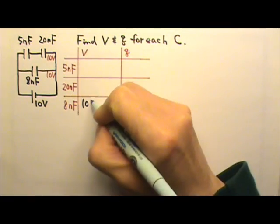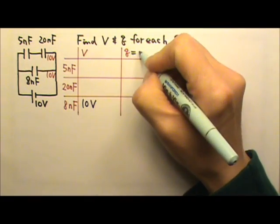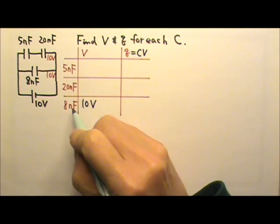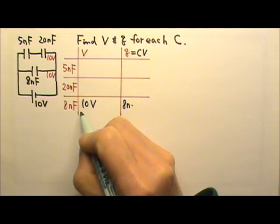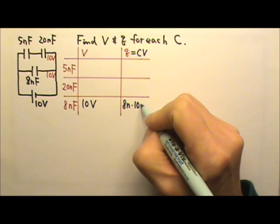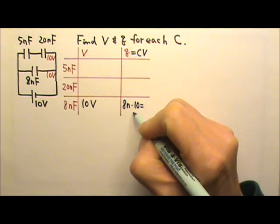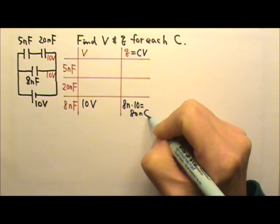And to find the charge, we just have to do Q equals CV. The capacitance is 8 nano. The voltage is 10 volts. So the charge is 80 nanocoulombs.